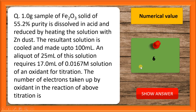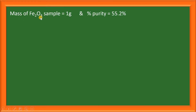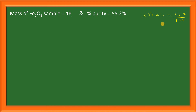Let's discuss the solution of this question. Mass of Fe2O3 sample is one gram and its percentage purity is 55.2%. One gram's 55.2% will be the mass of Fe2O3, that is 55.2 divided by 100, which equals 0.552. Therefore, mass of Fe2O3 is equal to 0.552 grams.